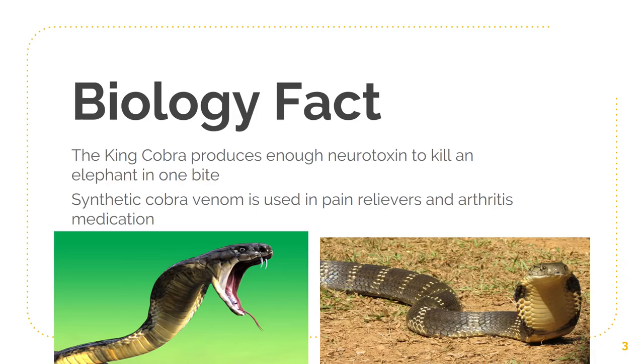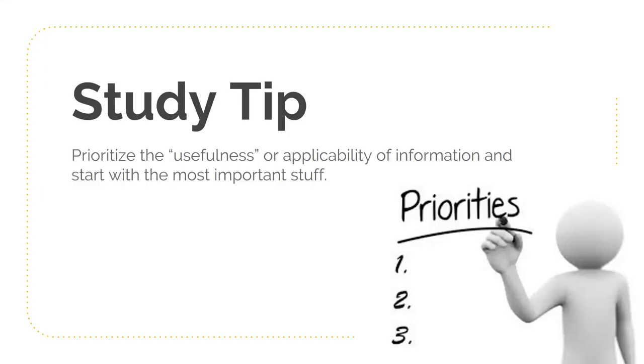Biology fact for the day is that king cobras produce enough neurotoxin to kill an elephant with one single bite, but you can also use synthetic cobra venom as a painkiller. In the right doses with the right mixture of other things, you can actually use cobra venom to treat pain and arthritis. We actually do experiments with cobra venom here at the University.